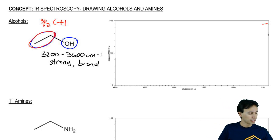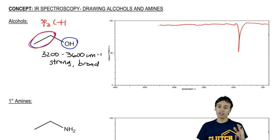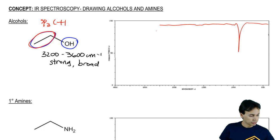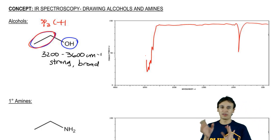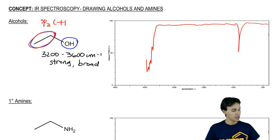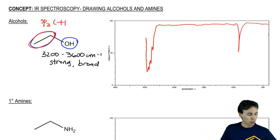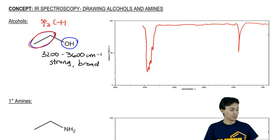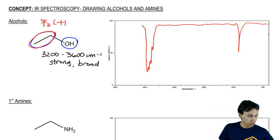Let's go ahead and draw this. I've got my fingerprint region — moving past that. Now I move all the way to 2,900 and draw my Sp3 peaks. You guys should be pretty good at drawing these Sp3 peaks by now — you've got your choppy Sp3 peaks. Then when we get to 3,200, it gets real — the alcohol absorption starts here.